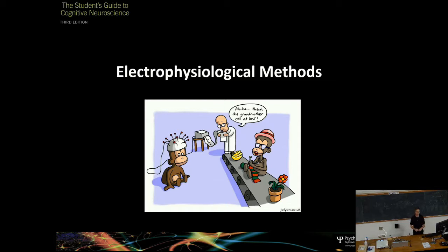For the second part of the lecture, I'm going to delve into a specific kind of method, which is electrophysiological methods. These are methods for recording the electrical activity of neurons, either invasively or non-invasively at the scalp. Next week I'll talk about a couple of other key methods around fMRI, brain stimulation, and neuropsychology.